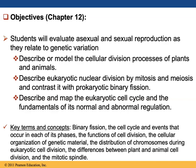In this chapter, you will evaluate asexual and sexual reproduction as they relate to genetic variation. In particular, you will describe or model the cellular division process of plants and animals, describe eukaryotic nuclear division by mitosis in order to compare it to meiosis and contrast it with prokaryotic binary fission, and describe and map the eukaryotic cell cycle and the fundamentals of its normal and abnormal regulation.